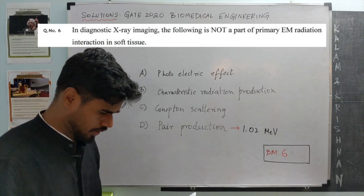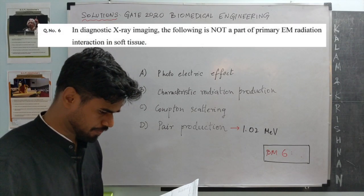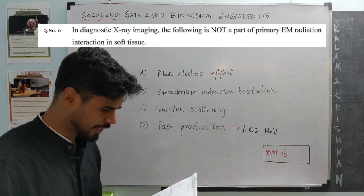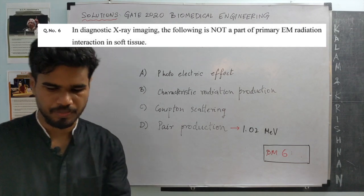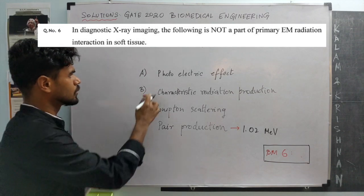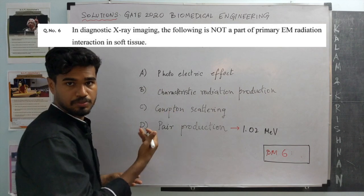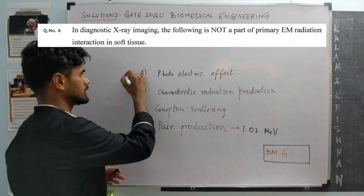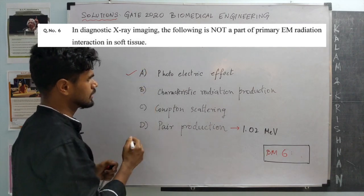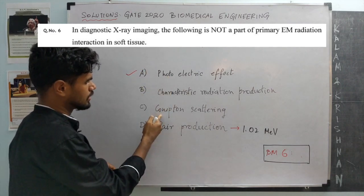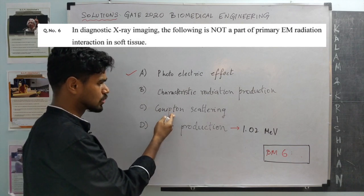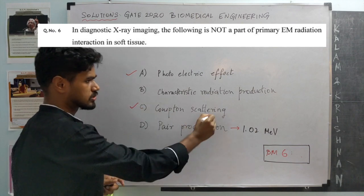Sixth question: in diagnostic x-ray imaging, the following is not a part of primary EM radiation interaction in soft tissue. Atoms in the soft tissue absorb x-rays and there is the photoelectric effect. Similarly, atoms absorb the photons and the electrons go to higher energy states — there is also Compton scattering.